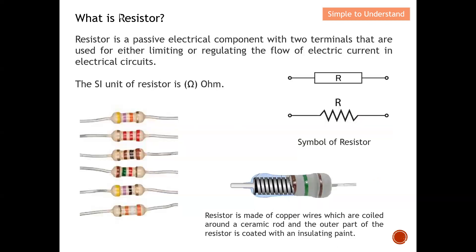Let's start by understanding what a resistor is and what role it plays in an electric circuit. A resistor is a passive electrical component with two terminals that are used for either limiting or regulating the flow of electric current in an electrical circuit. The role of a resistor is simply to control the amount of current that is able to flow. With a resistor, we can actually prevent high current from flowing through, meaning the control of the current can be easily done by the design of the resistor value.